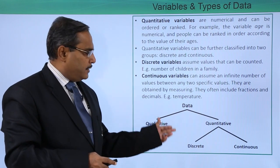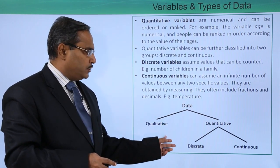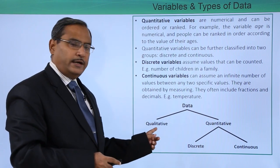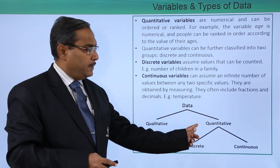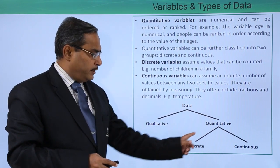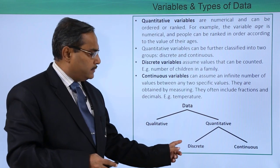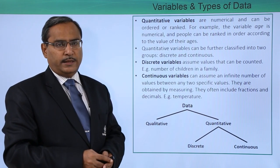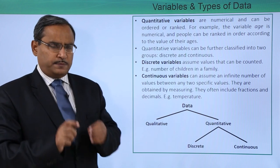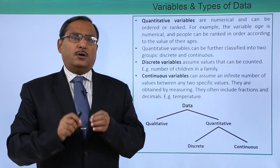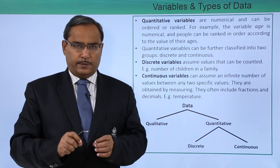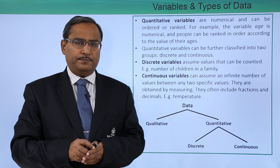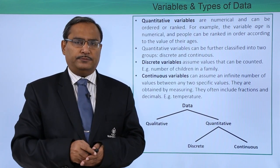Ultimately, we have landed with this conclusion: data can be of two types — qualitative and quantitative. And quantitative variables can be of two types: discrete and continuous. In this video, we have discussed what a variable is and the different types of data. Thanks for watching.